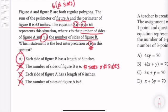So the correct answer choice is A. Each side of figure B has a length of 6 inches. It makes sense to find the perimeter. What we would do is multiply 6 inches times the number of sides.